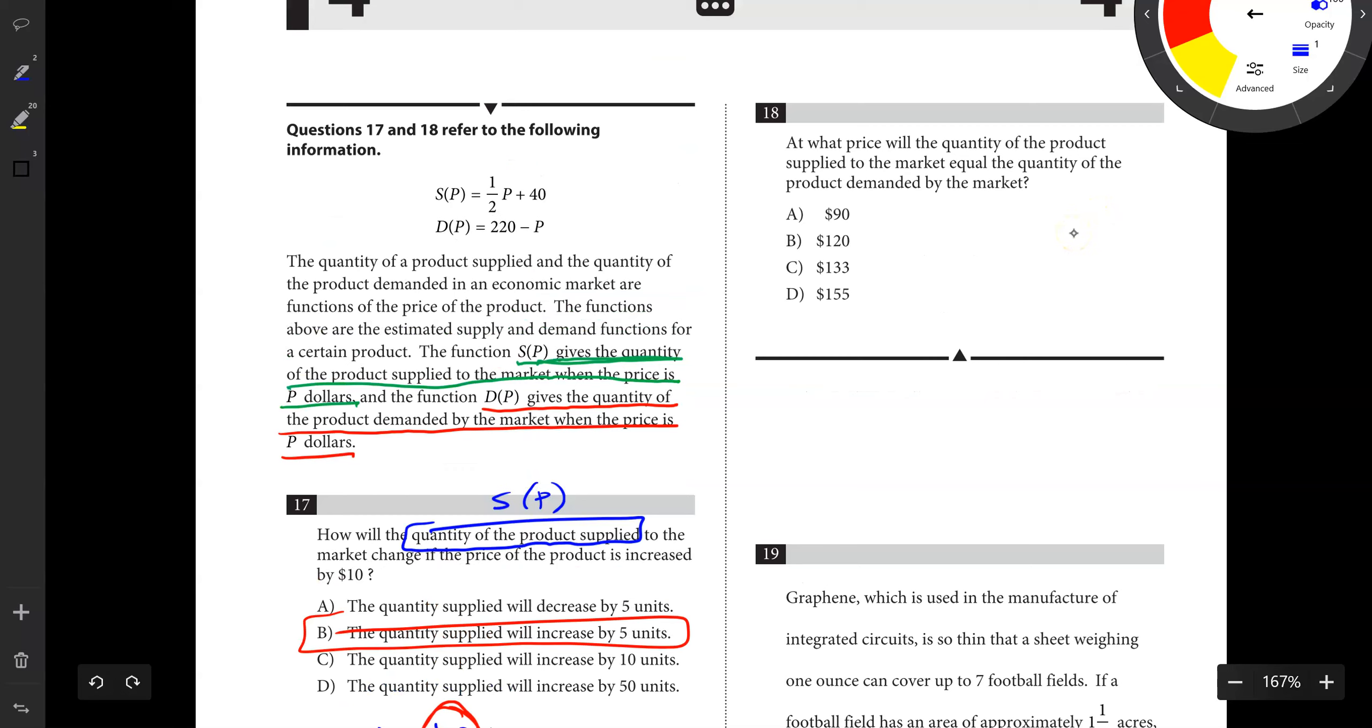Number 18 says, at what price will the quantity of the product supplied equal the quantity of the product demand? We want S of P to equal D of P. We go back, take our two equations, set those things equal. So one half P plus 40 equals 220 minus P. And we just start solving for P.